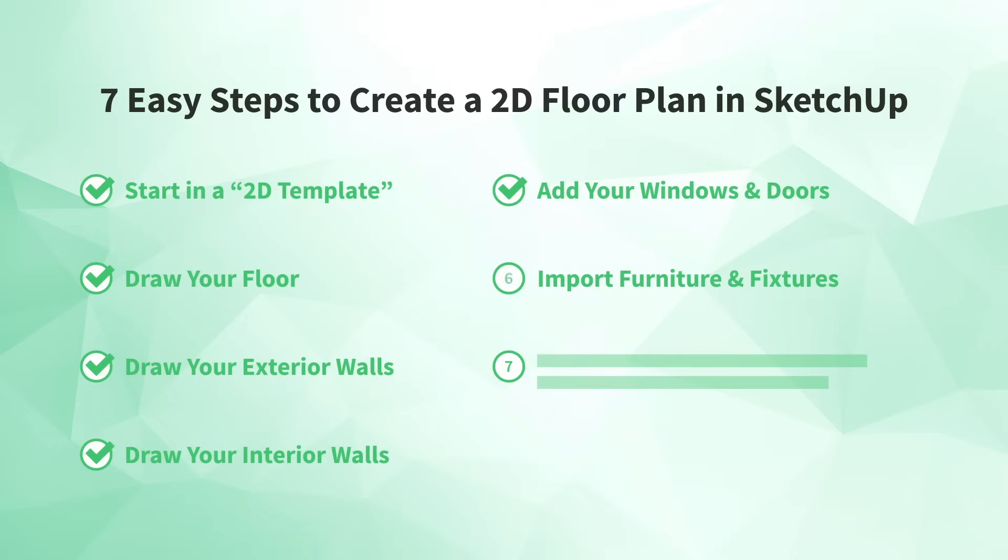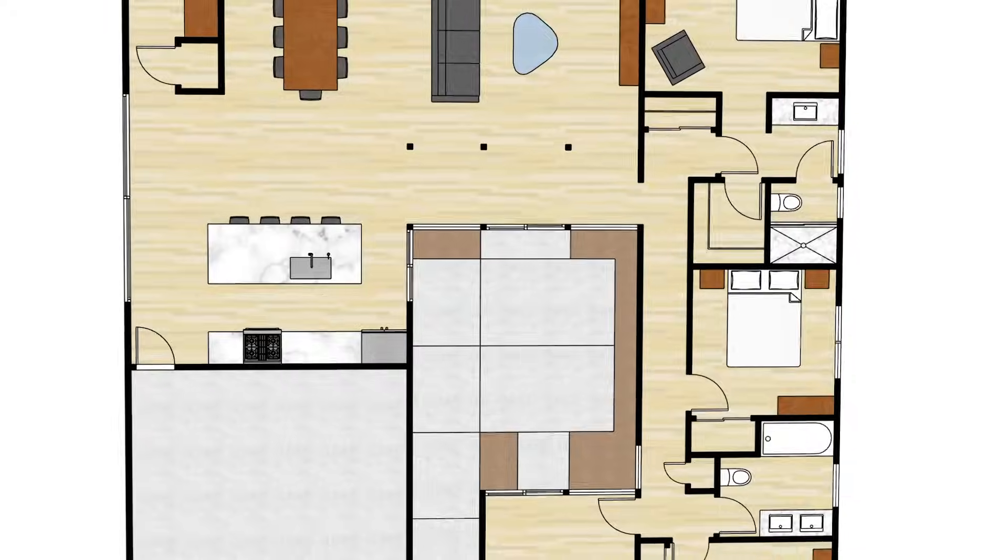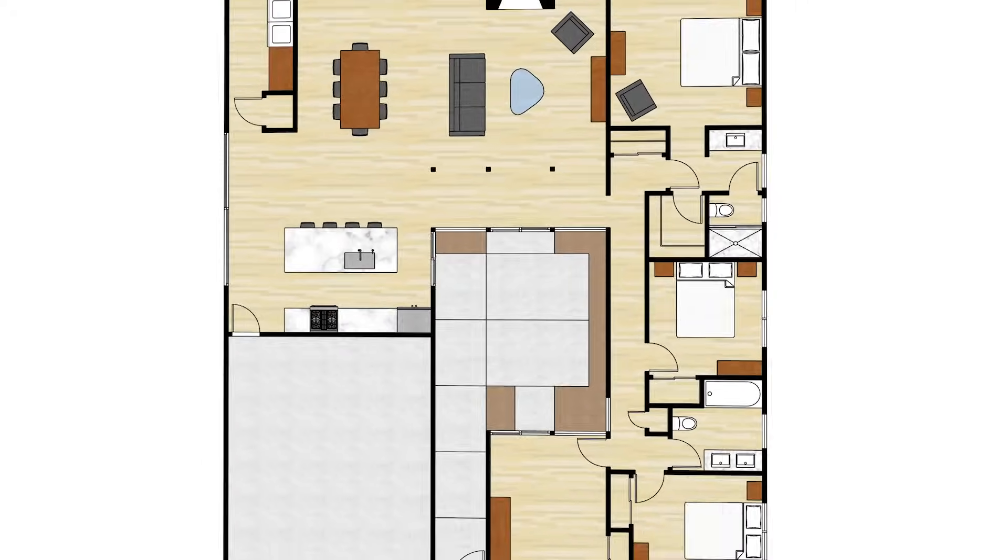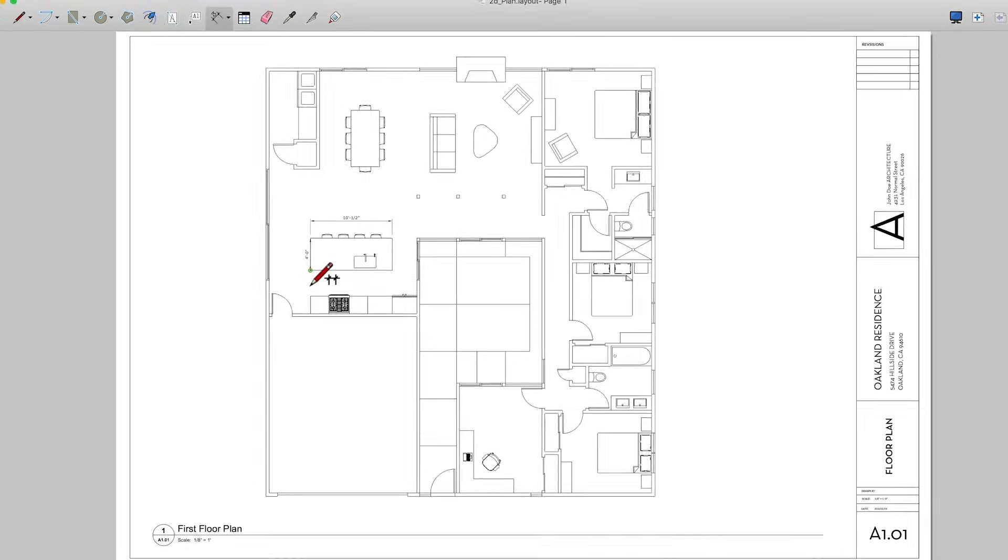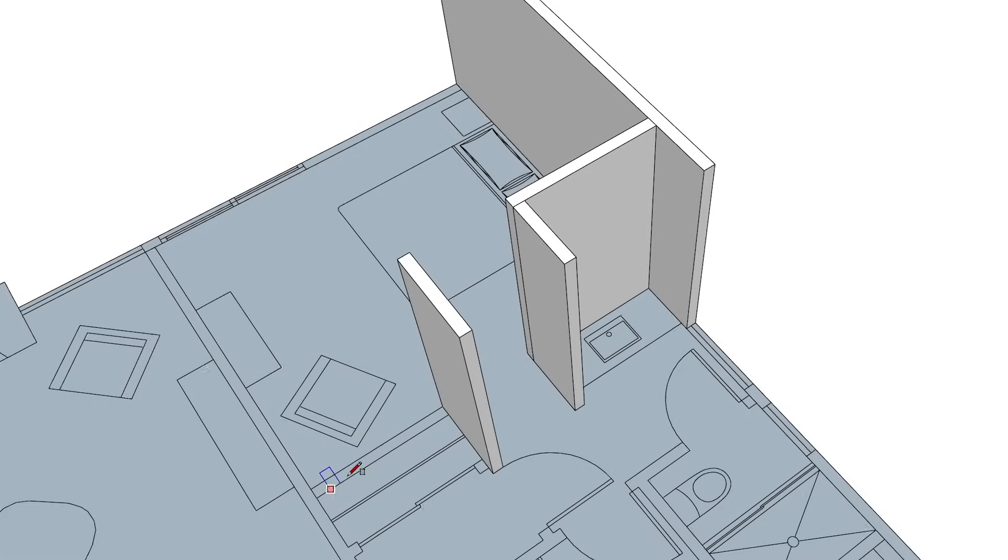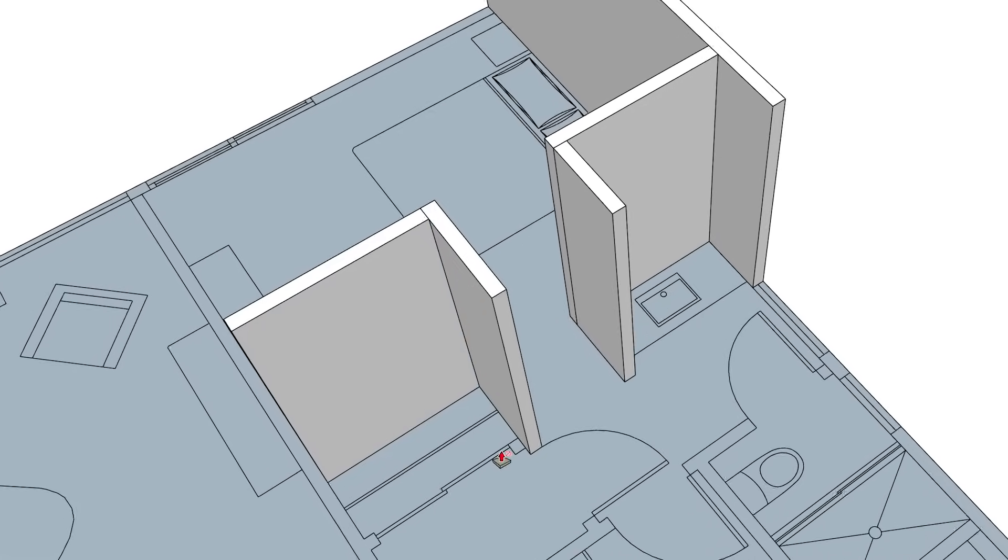Alright, you have all your 2D symbol components in place. Now you're ready for the last step. Number seven, style your plan for presentation. At this point, you're ready to take your floor plan in any number of directions. Perhaps you'll want to add some colors or materials to liven it up. Maybe you'll want to take it into layout, where you can easily add a title block, labels or dimensions. Or maybe you're ready to start building in 3D. We cover all those things in the courses on our website.